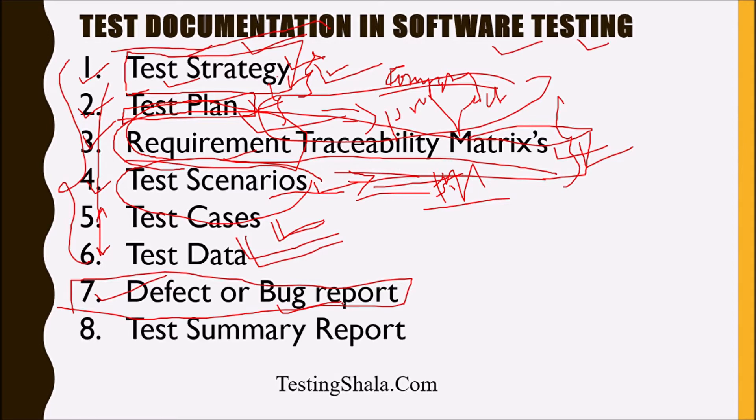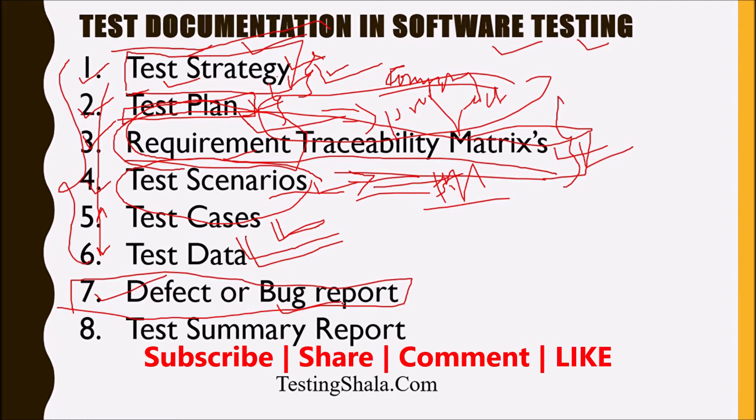The last documentation we create is the test summary report, also called the test closure report. This document covers all the different kinds of testing performed as part of the release and all the outcomes — from manual testing, automation, and performance testing perspectives. It also includes whether the entry and exit criteria have been met. Everything is written in the final test summary report.